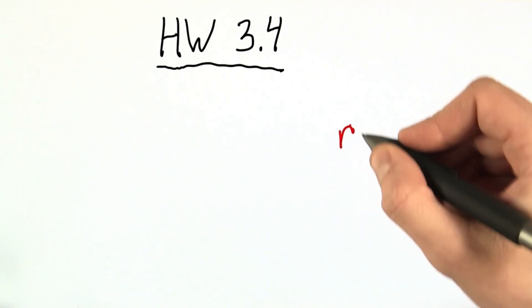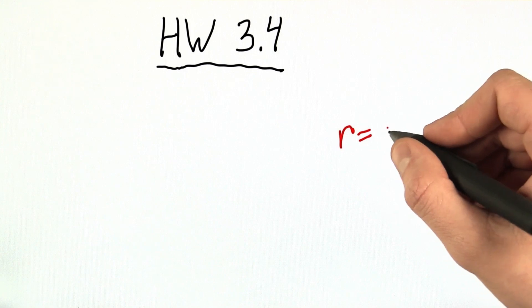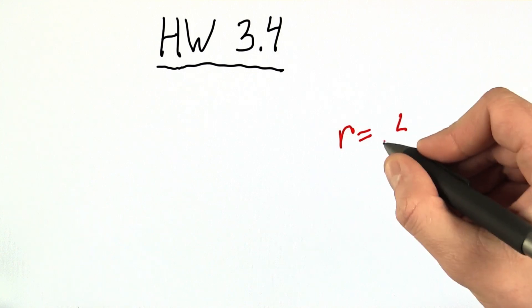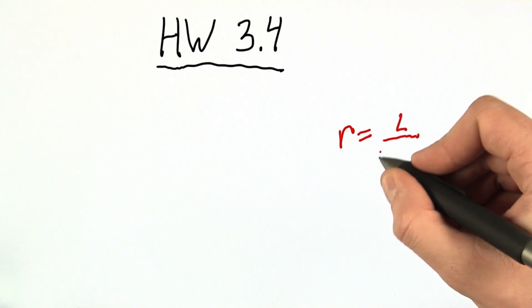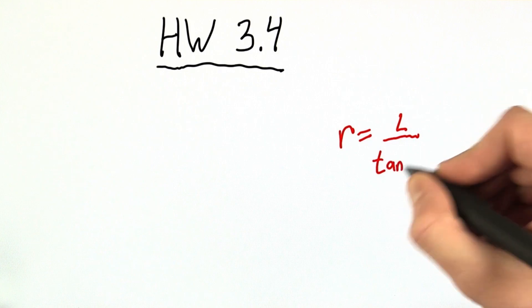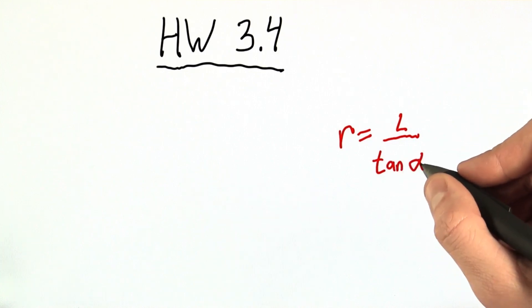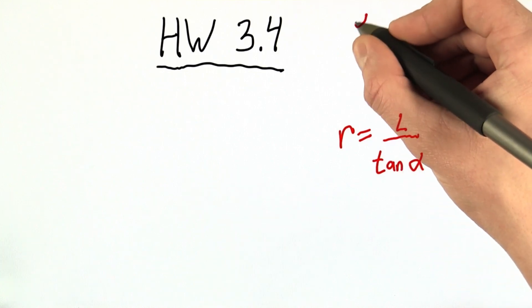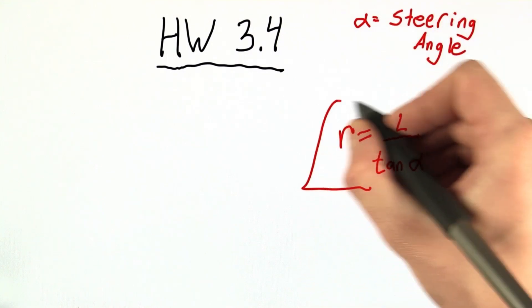So the first equation I want to talk about is this one. The radius of curvature is equal to the length of the vehicle over the tangent of alpha, where alpha is our steering angle. Let me write that up here. So where does this equation come from?